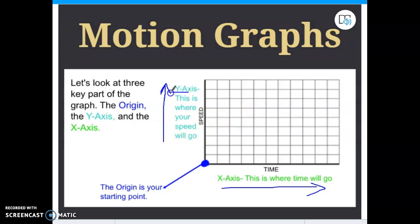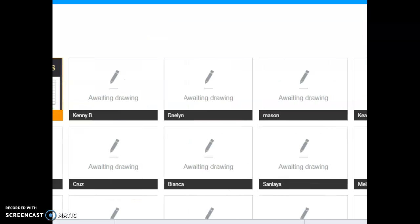This particular graph happens to be a speed time graph. We even took time yesterday to practice circling what type of graph it is. The people that are going to get the Nearpod code can actually do that at home if they want to go through and practice that.